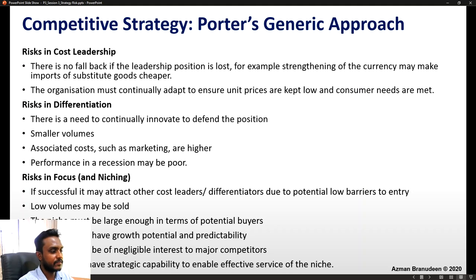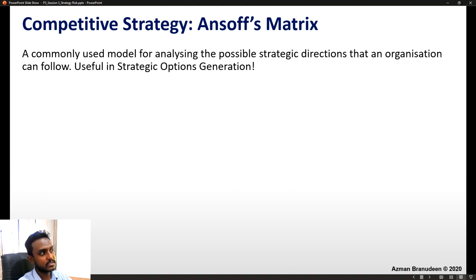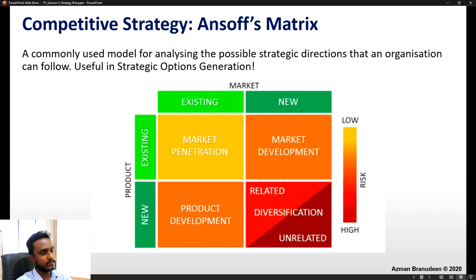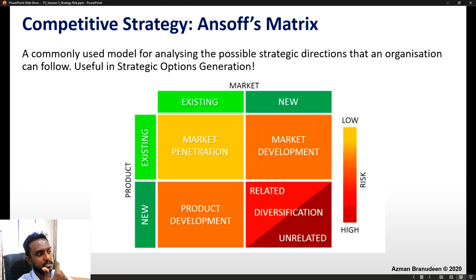Another famous tool is Ansoff's matrix — a commonly used model for analyzing possible strategic directions and useful in strategic options generation. The matrix classifies strategy using market and product as the two axes: existing market versus new market, and existing product versus new product, ultimately leading to four types of strategic options — market penetration, product development, market development, and diversification.